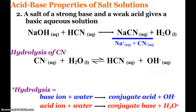A salt of a strong base and a weak acid will give us a basic aqueous solution. Here we have sodium hydroxide, a strong base, reacting with hydrogen cyanide, a weak acid, to get sodium cyanide and water. The sodium ion, coming from sodium hydroxide, will not hydrolyze. But the cyanide ion will. Cyanide reacts with water to make more HCN, but it also produces hydroxide. By producing those hydroxide ions, our salt solution will be slightly basic.